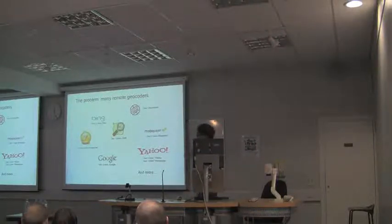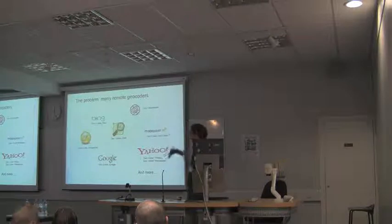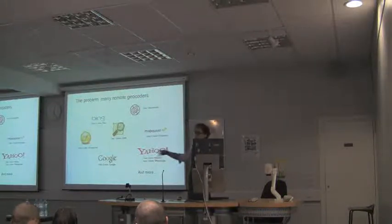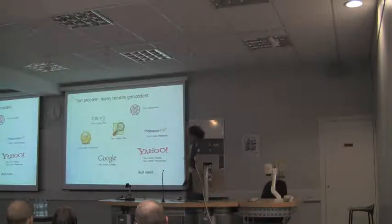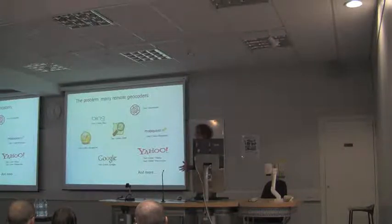With each one I've put the relevant Perl module that you could use. Pretty much the naming convention has been Geo::Coder::NameOfService. The one big exception is CloudMade. I should also say for some of these there are multiple modules — people decided they had to reinvent the wheel. But in general I would recommend you use the Geo::Coder::service modules. There are a lot of different services you could be using to do remote geocoding.